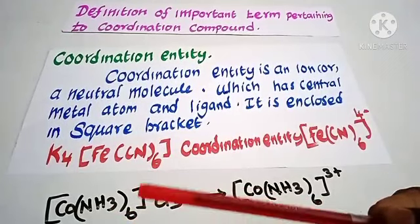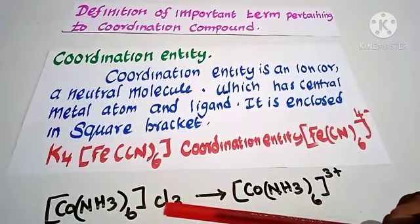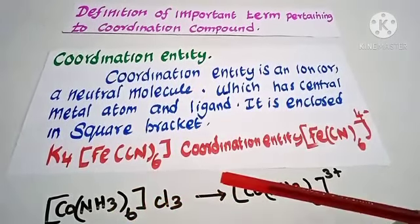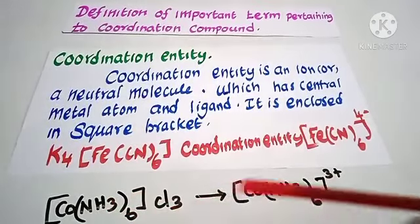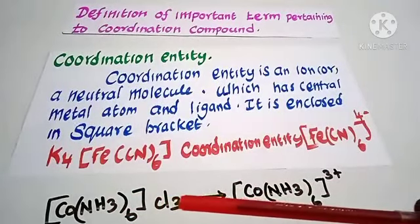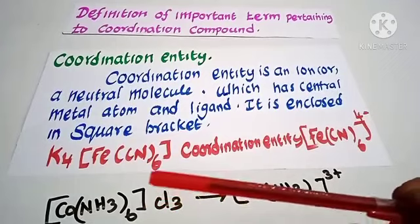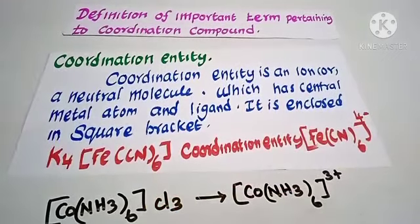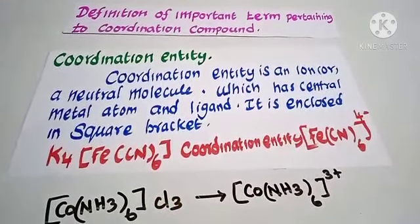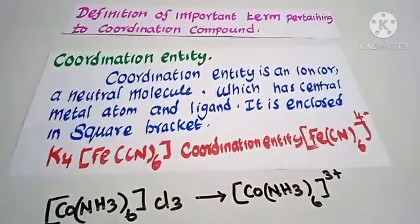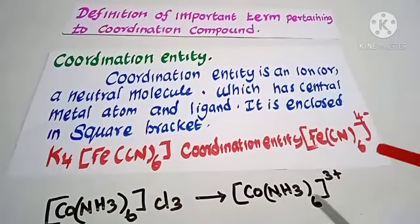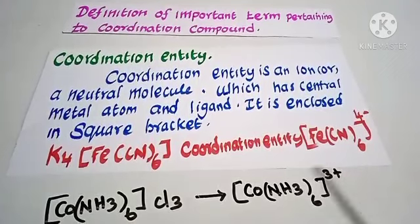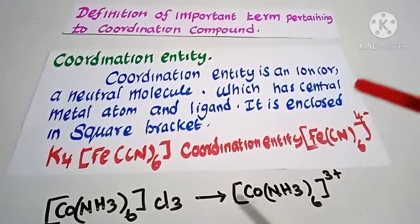The coordination entity is written along with the charge on it. For example, CoCl3 is placed outside. The charge can be positive, negative, or neutral depending on the coordination entity.